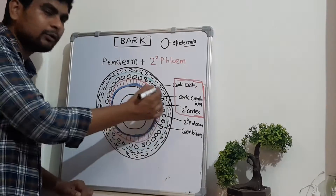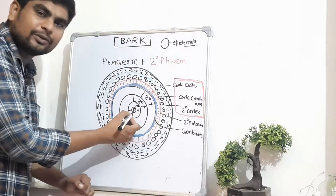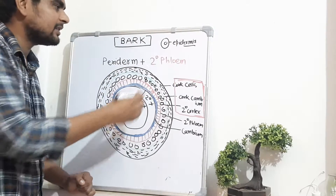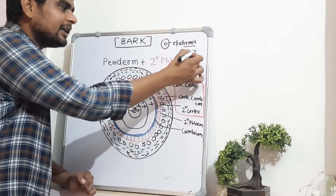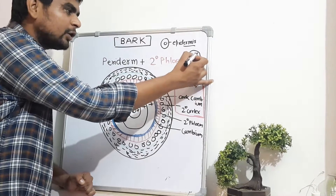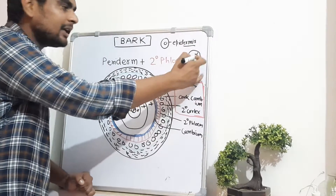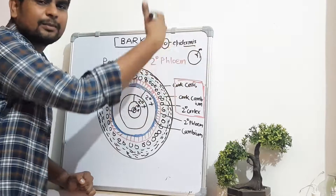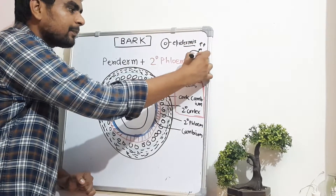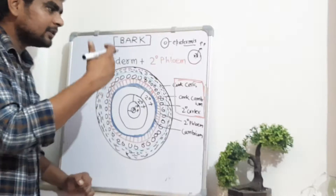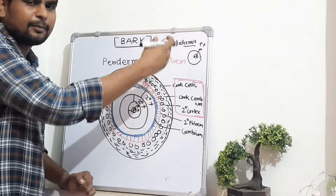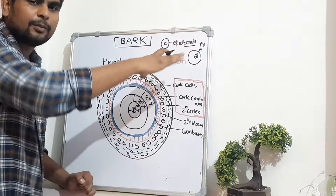When we look at a stem from inner to outer, we see the primary growth layers: primary xylem towards the center, cambium in the middle, and primary phloem towards the periphery. After secondary growth initiates, the primary phloem mainly ruptures, and new secondary xylem as well as secondary phloem are formed.